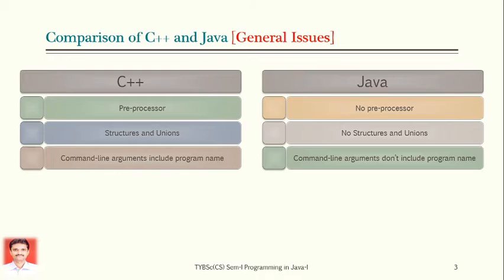The third point is about command line arguments. When you are executing your program from the command prompt of the operating system, in C++, command line arguments also include the name of the program. However, in Java, the program name is not part of the command line arguments. So these are the differences when considering general issues.